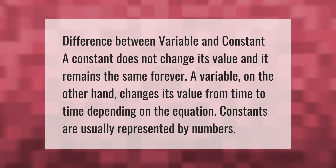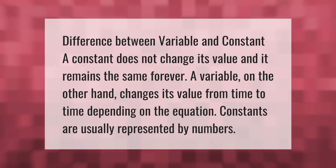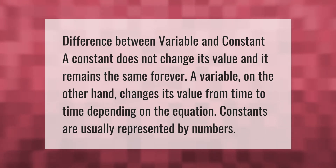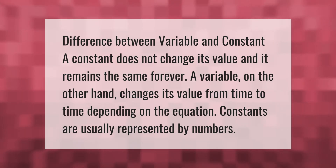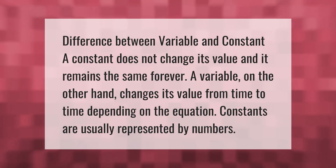Difference between variable and constant: a constant does not change its value and it remains the same forever. A variable, on the other hand, changes its value from time to time depending on the equation. Constants are usually represented by numbers.